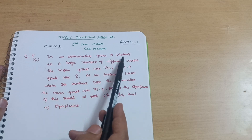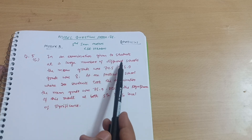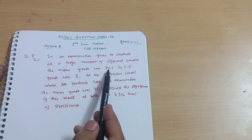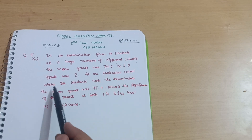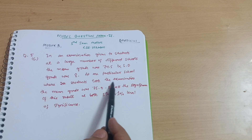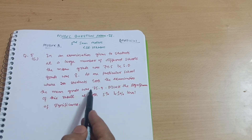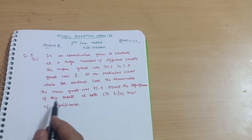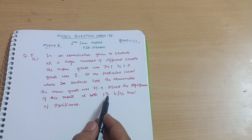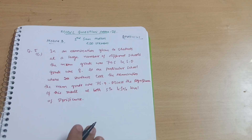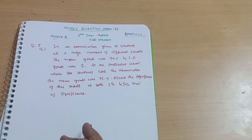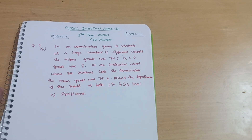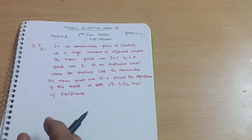In an examination given to students at a large number of different schools, the mean grade was 74.5 and standard deviation was 8. At one particular school where 200 students took the examination, the mean grade was 75.9. Discuss the significance of the result at both 5% and 1% level of significance. I have also solved varieties of similar problems — the link is in the description box.